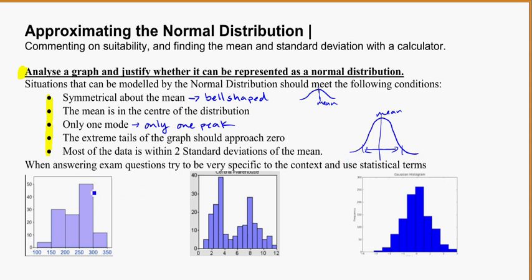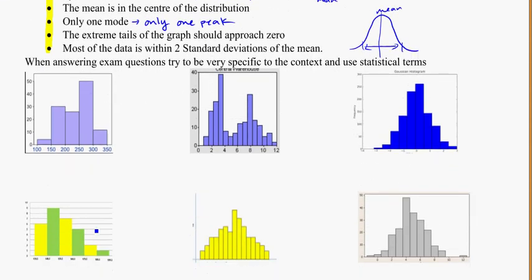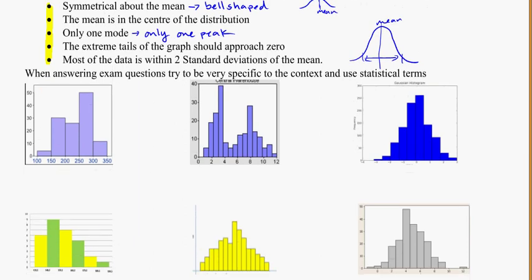So thinking about those criteria, let's take a look at these graphs and just decide whether or not they would meet the normal distribution. When you're answering exam questions, remember to be very specific about the context. If it's size of kiwifruit, lengths of waiting times, things like that, make sure you're being specific about the context, what the problem is actually about. And use your statistical terms - everything we just talked about - being specific about mean and symmetrical and modes, things like that.